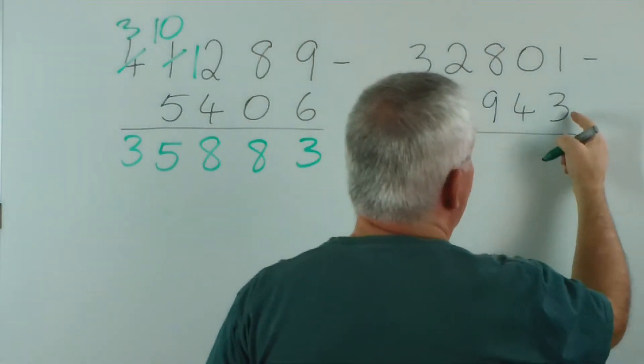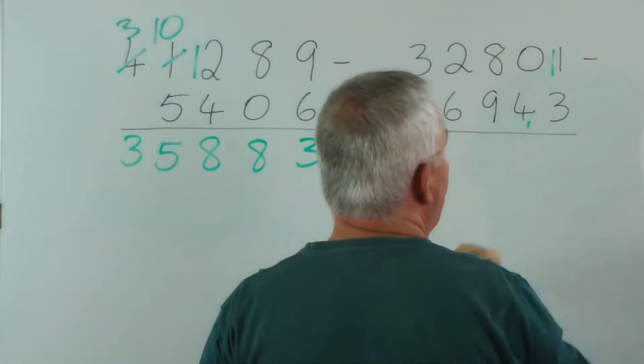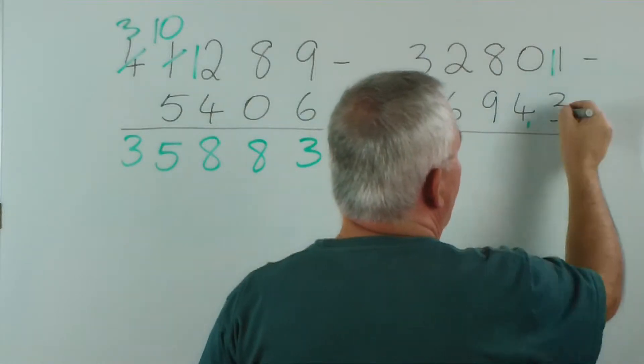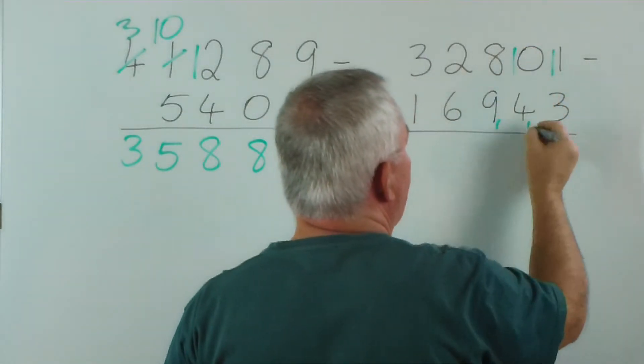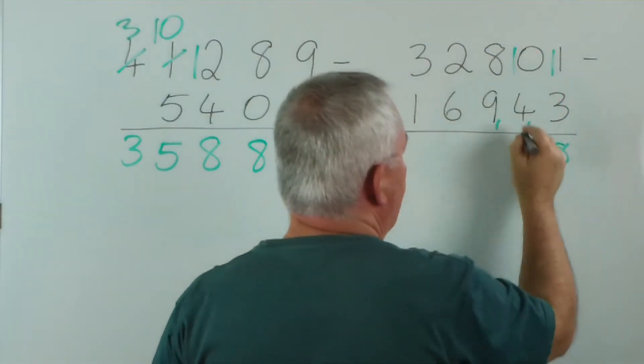Using the carry method... oh, we've straight away run into problems. 3 from 1 we can't do, so we carry. 3 from 11 is 8. 4 from 0 we can't do. 4 from... 5... sorry, that's 5 here. 5 from 10 is 5.